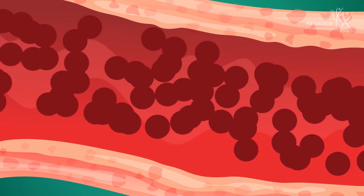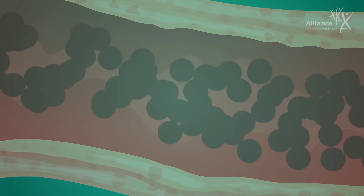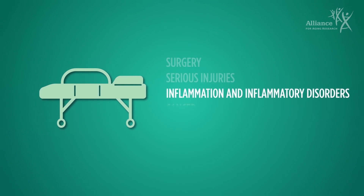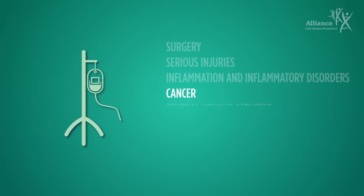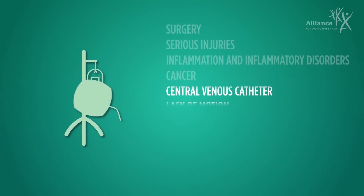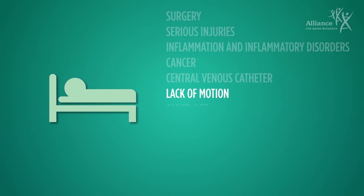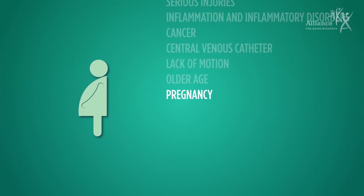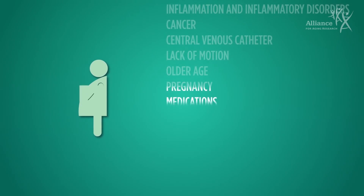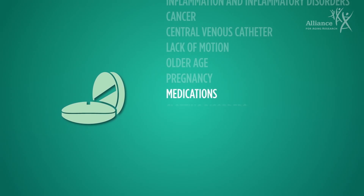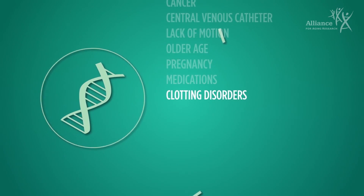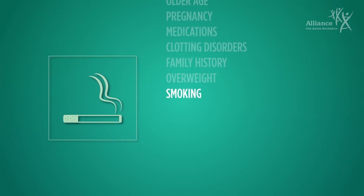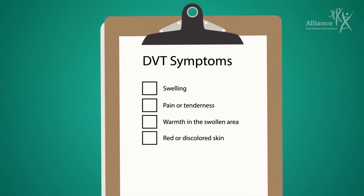Many factors can make a person more likely to develop blood clots and DVT or PE, including surgery, serious injuries, inflammation and inflammatory disorders, cancer, use of a central venous catheter, lack of motion from hospitalization, extended bed rest or a leg cast, older age, pregnancy and the four months after delivery, use of certain medications like birth control and hormone replacement therapy, inherited or acquired clotting disorders, family history of clots, overweight or obesity, and smoking.